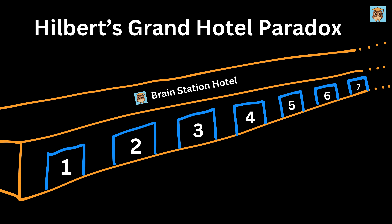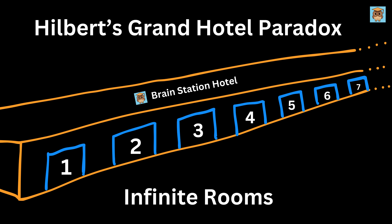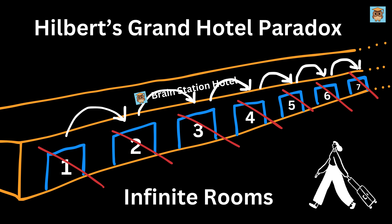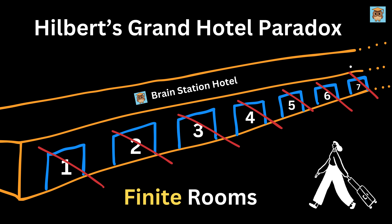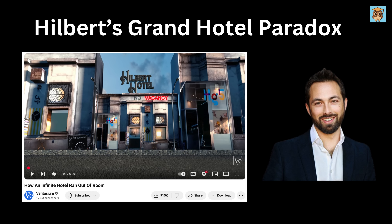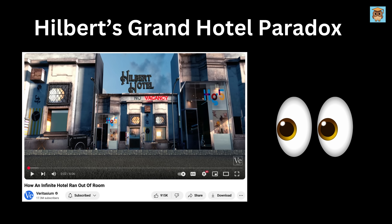Next up, we have Hilbert's Grand Hotel Paradox, where a hotel has infinitely many rooms and all of them are occupied. A new guest arrives. How can the hotel still fit them in? Since the hotel has an infinite number of rooms, the manager can simply move every guest from room N to room N+1, freeing up room 1 for the new guest. This is strange, because in real life, if a hotel is full there is no space left. But in infinity, space can always be made.